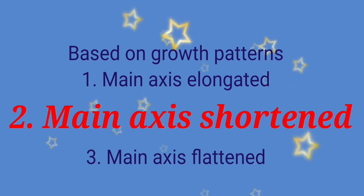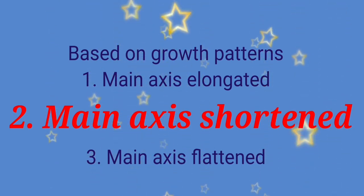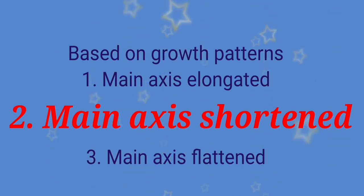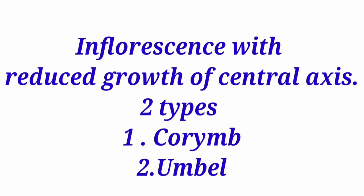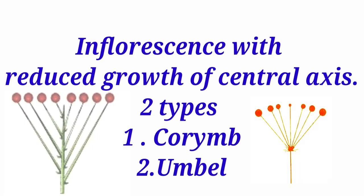In this video we are going to discuss about the main axis shortened racimose inflorescence. Here the inflorescence is found with the reduced growth of the central axis, that is the peduncle. Based on this, the main axis shortened racimose inflorescence is divided into two types: that is corymb and umbel.